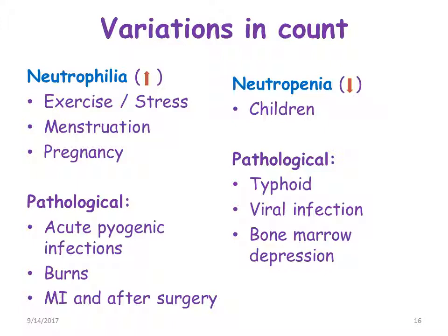Neutrophilia is an increase in the neutrophil count, and neutropenia is a decrease. Examples of neutrophilia include exercise, stress, menstruation, and pregnancy. Neutropenia is seen in children. Pathological conditions causing neutrophilia include acute pyogenic infections, burns, myocardial infarction, and post-surgery. Pathological conditions causing neutropenia include typhoid, viral infection, and bone marrow depression.